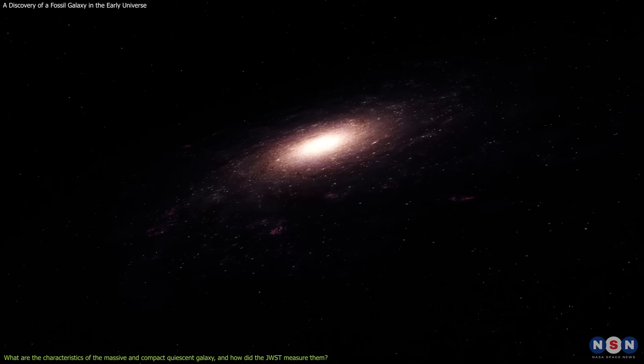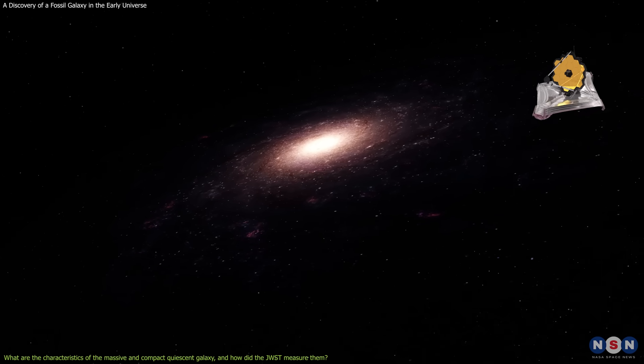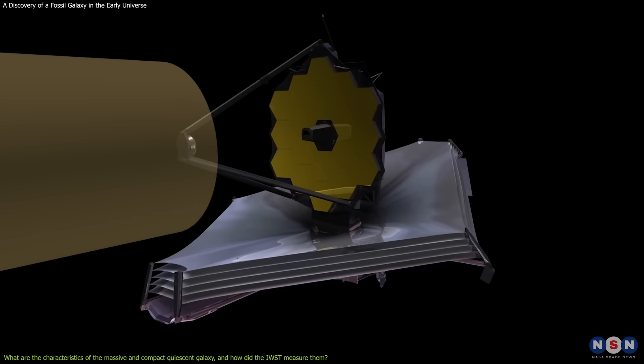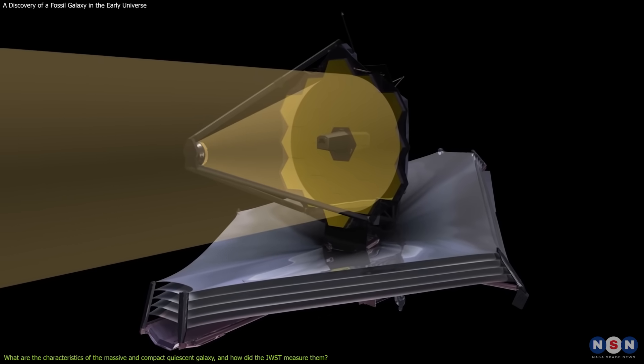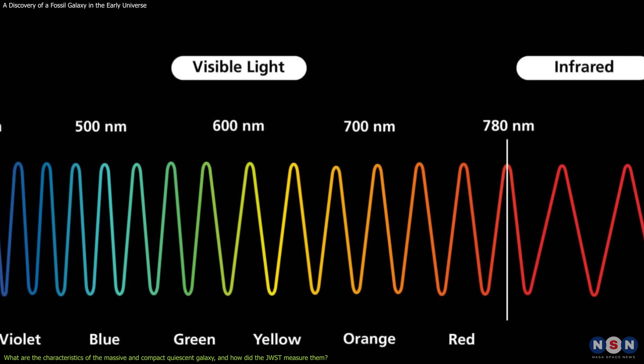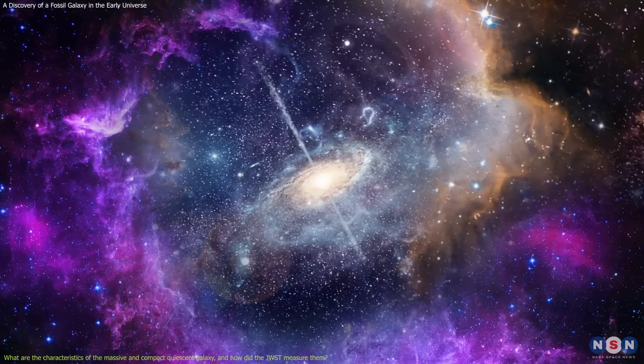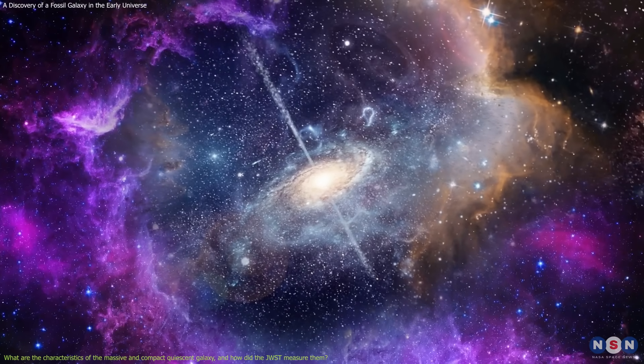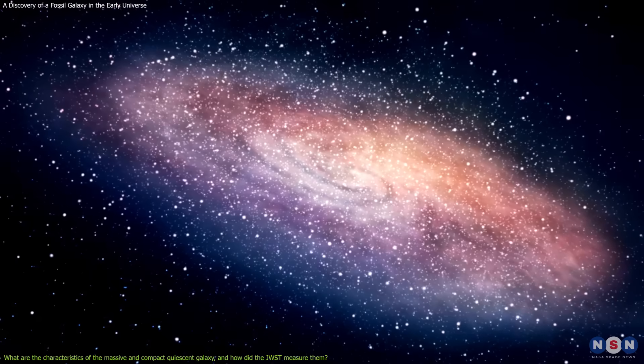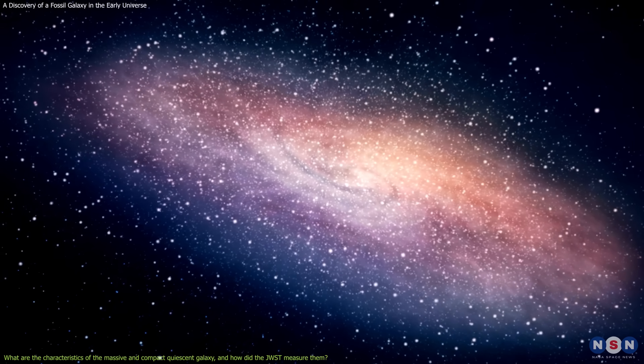But how do we know all this? In other words, how did James Webb measure these properties of the quiescent galaxy? Well, the answer is by using its high resolution and sensitivity to observe the infrared light from the galaxy. This is the light that has a longer wavelength than the visible light, and it can penetrate through dust and gas that can obscure the visible light. It can also tell us about the temperature, age, and chemical composition of the stars and galaxies.